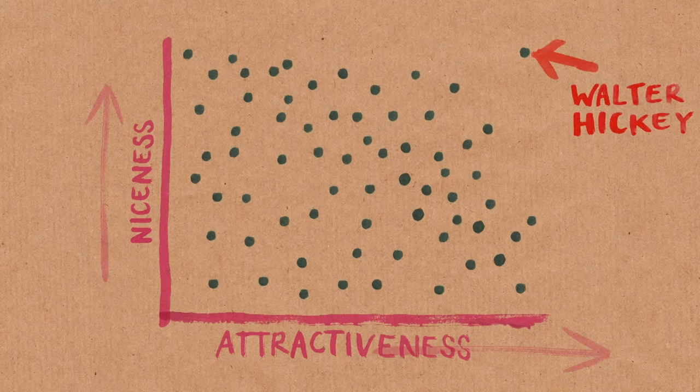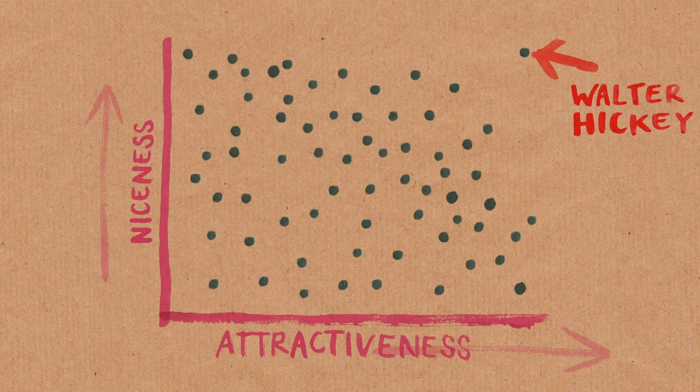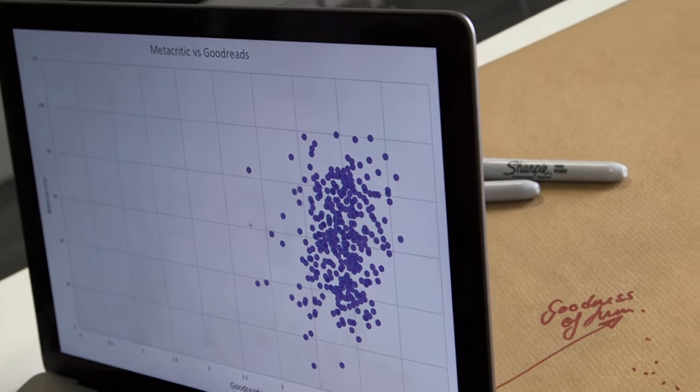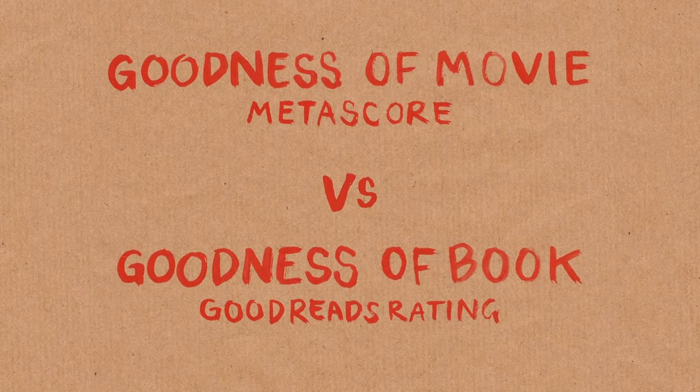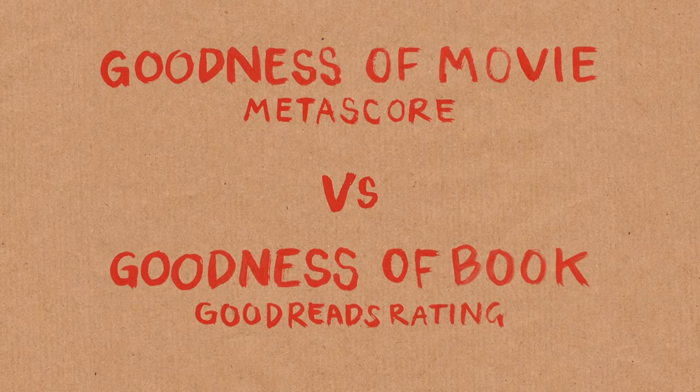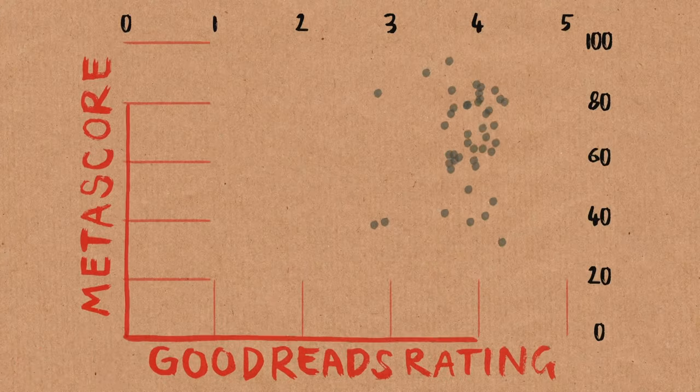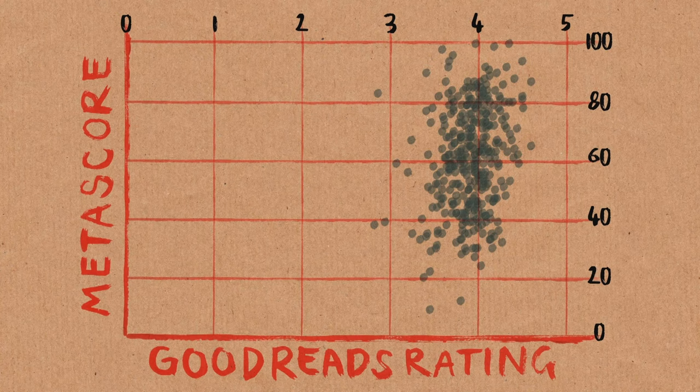So just to prove that there isn't this negative correlation, this sort of secret negative correlation that Hollywood are ruining good books, I spoke to a journalist called Walter Hickey, who has done some analysis where he has downloaded the data for all of the films that he could find, which were both made into a film and were released as a novel. So he got the Metacritic score, which is kind of like a posher version of Rotten Tomatoes, essentially. And he also got the Goodreads score, which is a similar sort of thing, a user-generated score.